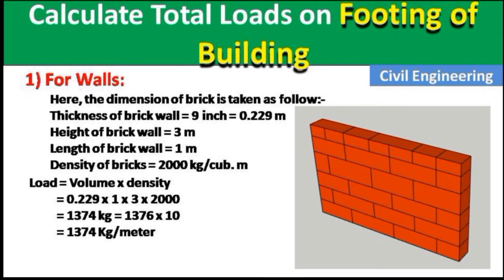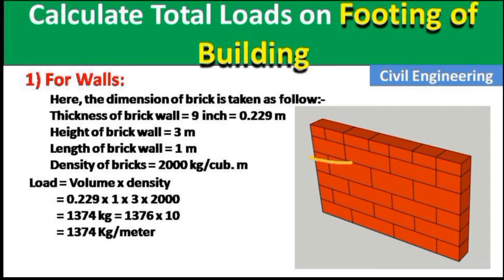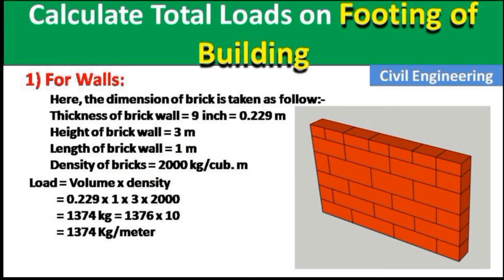I will first calculate the total weight by the wall. The dimensions are: thickness of wall = 9 inches, height of brick wall = 3 meters, and length = 1 meter. I am taking length as 1 meter so that after calculating the weight of 1 meter of wall, I can multiply it by the total wall length. The density of brickwork is 2000 kg per cubic meter.